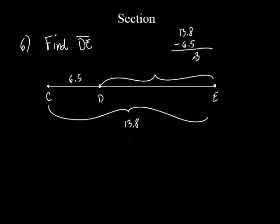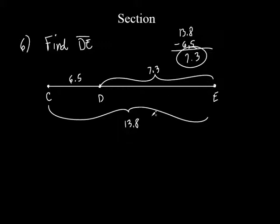So that's 7.3 — that is your answer right there. It's good to see it drawn out because it tells you whether you need to add or subtract. They could have given you CD is 6.5 and DE is 7.3 and asked you to find CE — then you would add them. The math wasn't hard; it was knowing what to do. I drew it out, and that drawing was not on the worksheet — it told you in words, but I drew it as well.